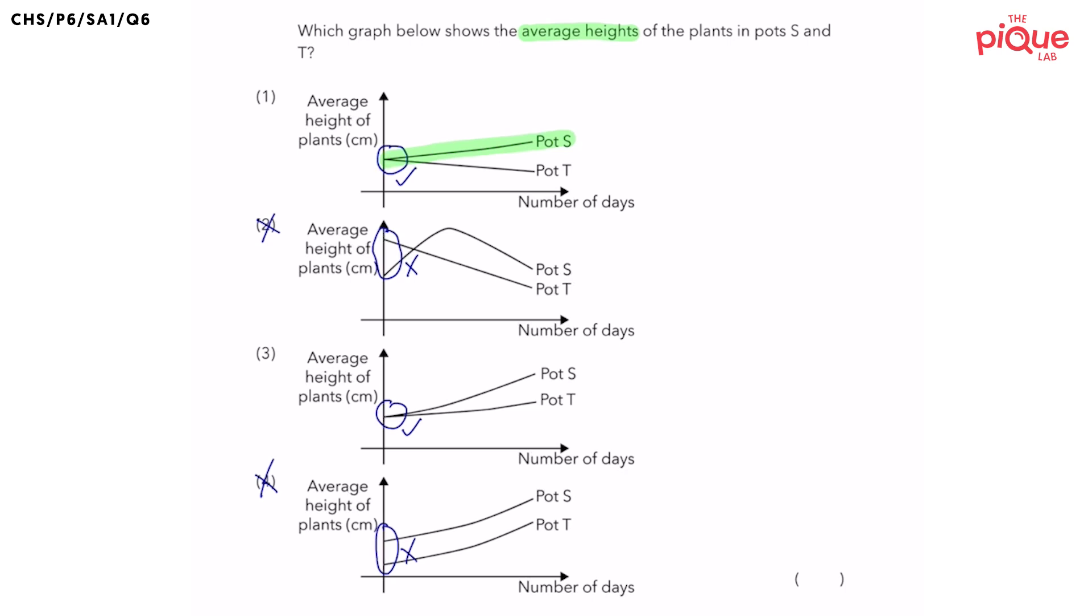They are increasing, right? So that is what we want. But how about for pots T? The average height of the plants in pots T is actually decreasing.